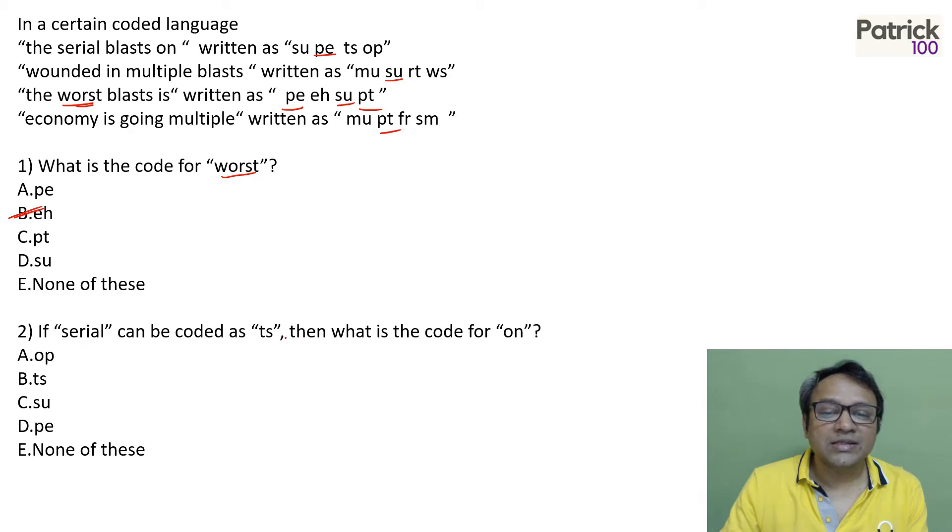Serial can be coded as TS. Then code for ON. Serial and ON is there in the first, nowhere else. Let's look at DER and BLAST. So DER has to be coded somewhere else. So SU is coded as DER.